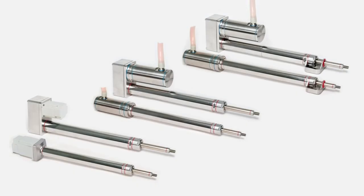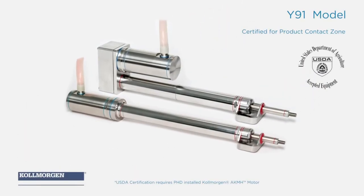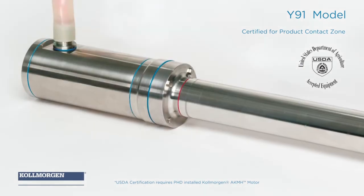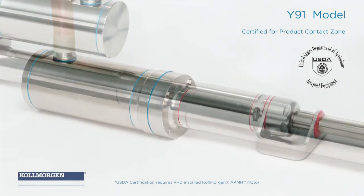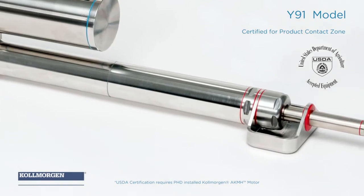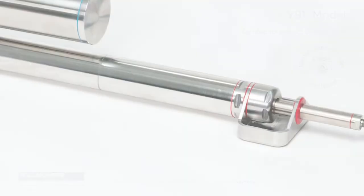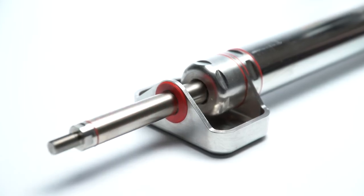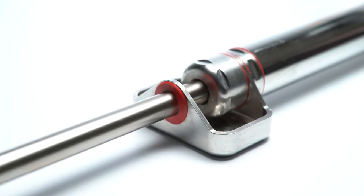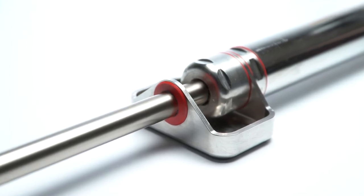The third option, also similar to the base and Y8 models, is the Y91 model with a Kollmorgen AK-MH motor installed by PHD and is USDA certified, providing safety and efficiency in product contact zones and environments requiring caustic washdowns. It includes an external rod wiper and sanitary tray for over-product processes.